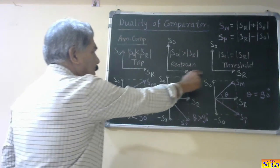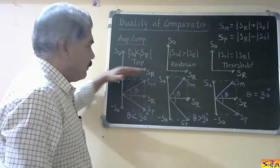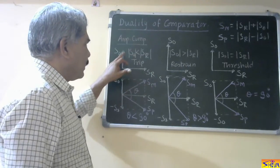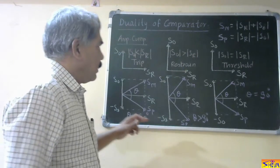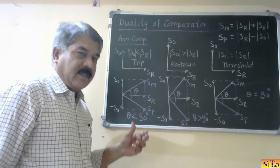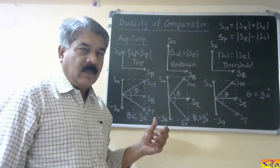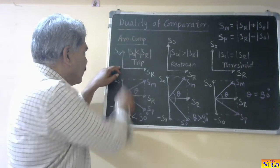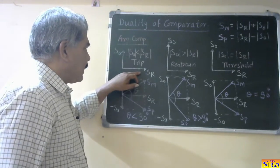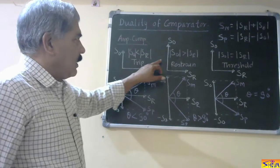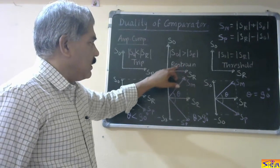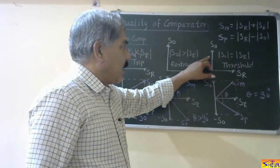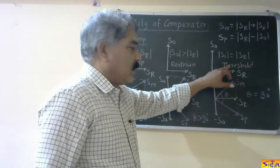The amplitude comparator conditions are shown. SR is the reference quantity and SO is the operating quantity. When SO is less than SR, this is the trip condition. When SO is greater than SR, this is the restraining condition. When SO and SR are both equal, this is the threshold condition. For simplicity, the angle between the two quantities is fixed at 90 degrees.